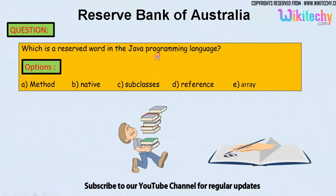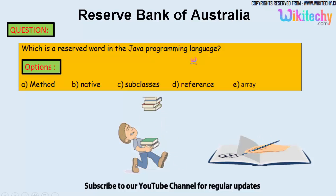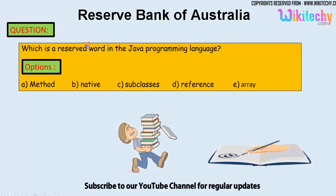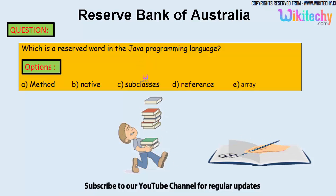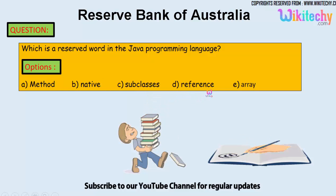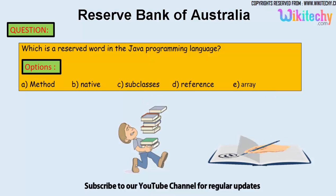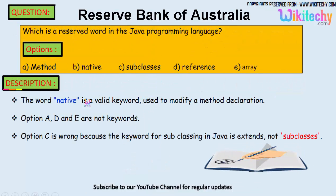The question is: which is a reserved word in the Java programming language? A reserved word — for example, 'int' is a reserved word. Such reserved words in Java need to be identified. The options are: method, native, subclasses, references, and array.